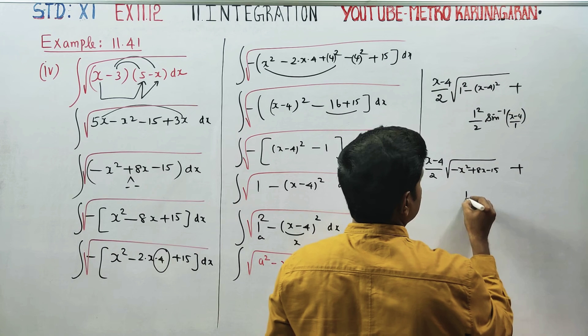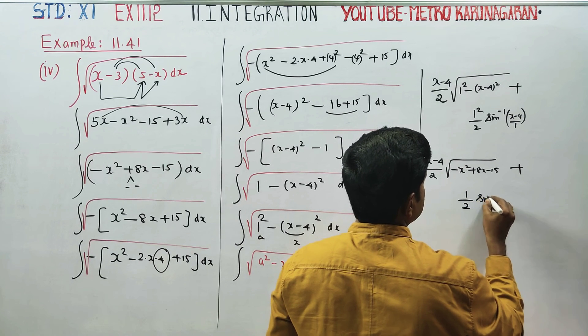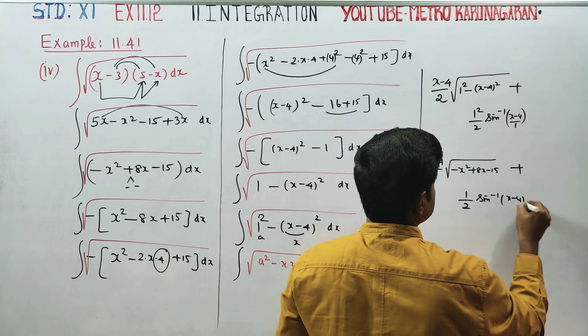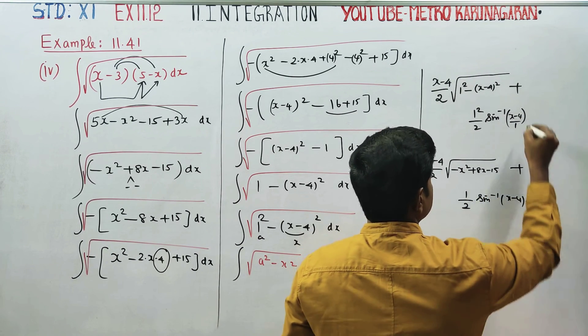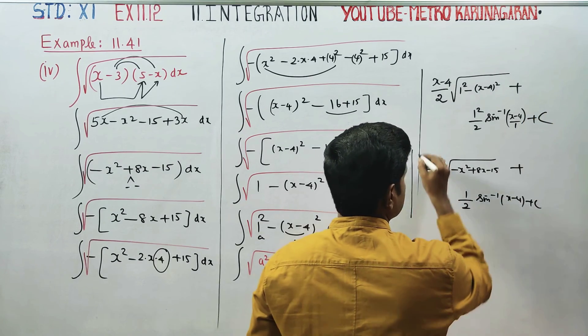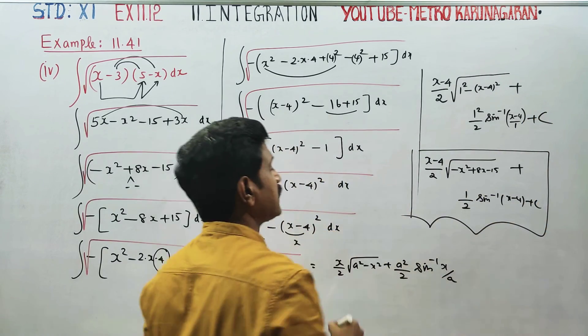The last step gives (x minus 4) by 2 times square root of the expression, plus 1 by 2 sine inverse of (x minus 4) plus C, where C is the integration constant. This is the final answer.